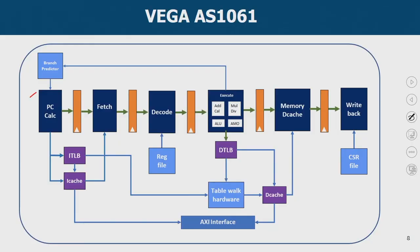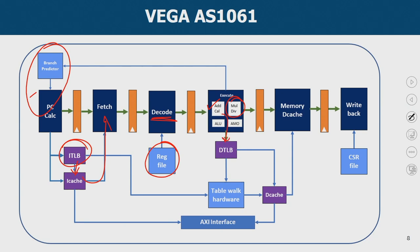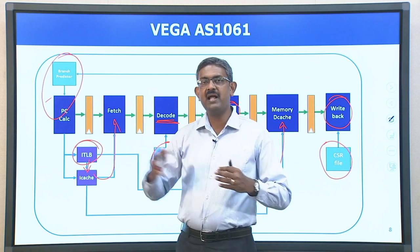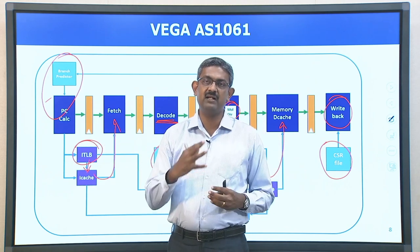Stage 1 is the PC calculation stage, which is connected to the branch predictor. Once the PC is calculated, it goes to the instruction TLB and then to the icache, from which fetching happens — that is stage 2. Then you decode, read the basic operands, and have the execute unit, which takes care of address calculation for load and store instructions. For other operations, you carry out the computation. For load and store, the address goes to the data TLB and then to the dcache where memory access takes place. Then we have the write back stage, where control and status registers are updated based on the result. For communicating to other IOs, the AXI interface is supported. This pipeline is more or less the same as the traditional RISC pipeline — the basic 5-stage RISC load-store architecture.